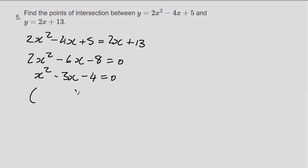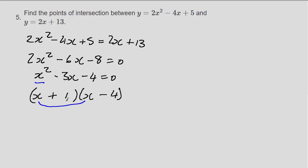We can factorize this as (x minus 4)(x plus 1). Checking: x times x gives x squared; x times minus 4 gives minus 4x; x times 1 gives plus x, combining to give minus 3x; and 1 times minus 4 gives minus 4. So our factorization is correct.